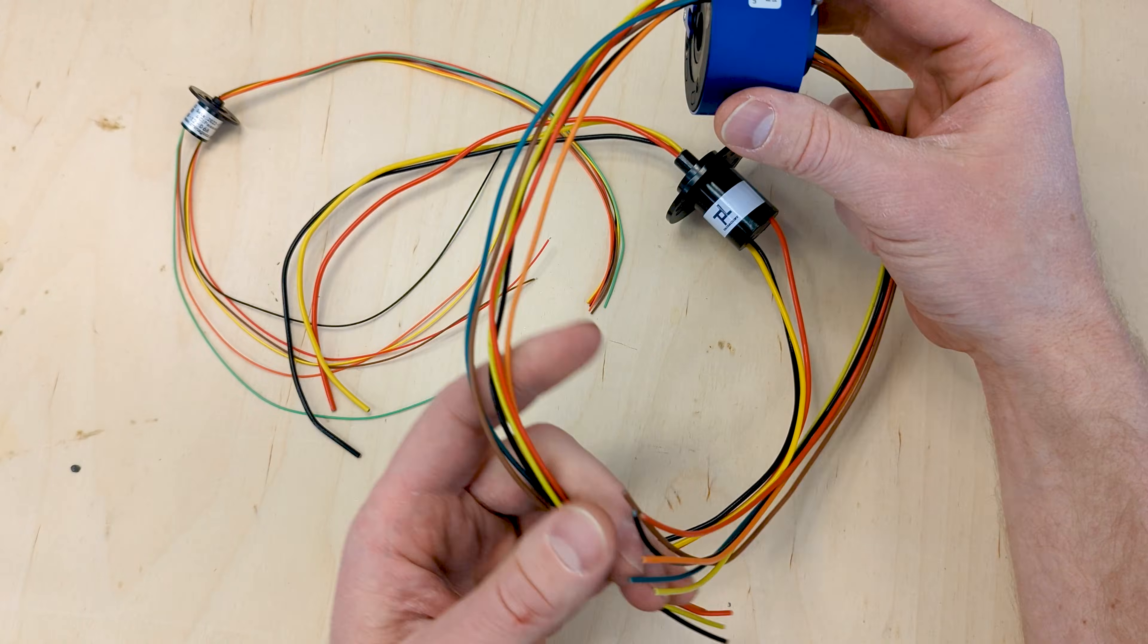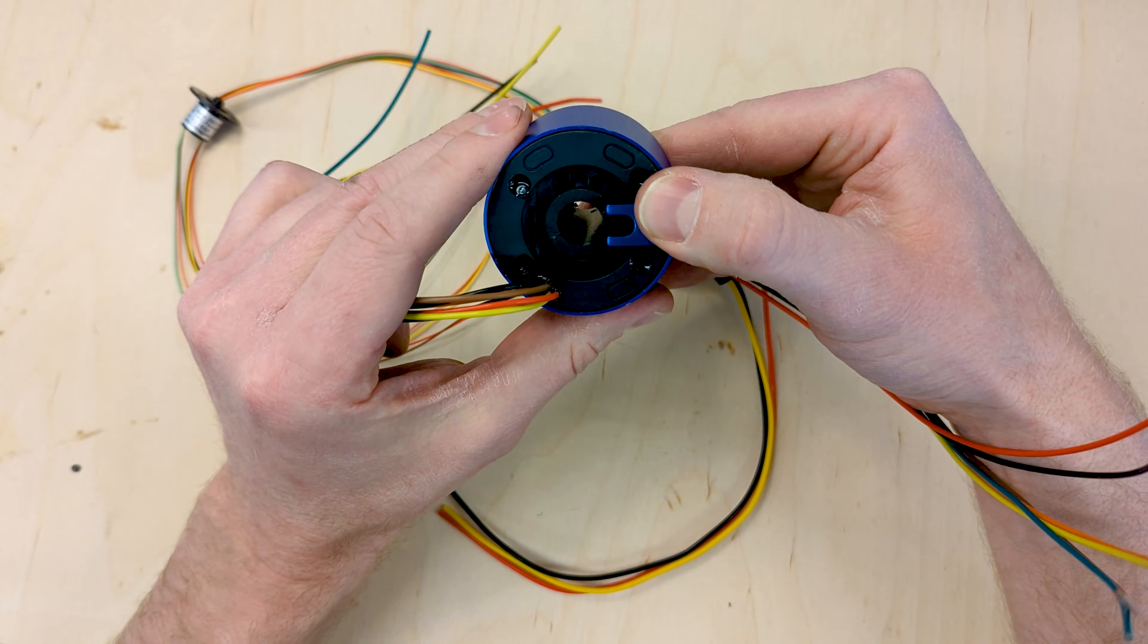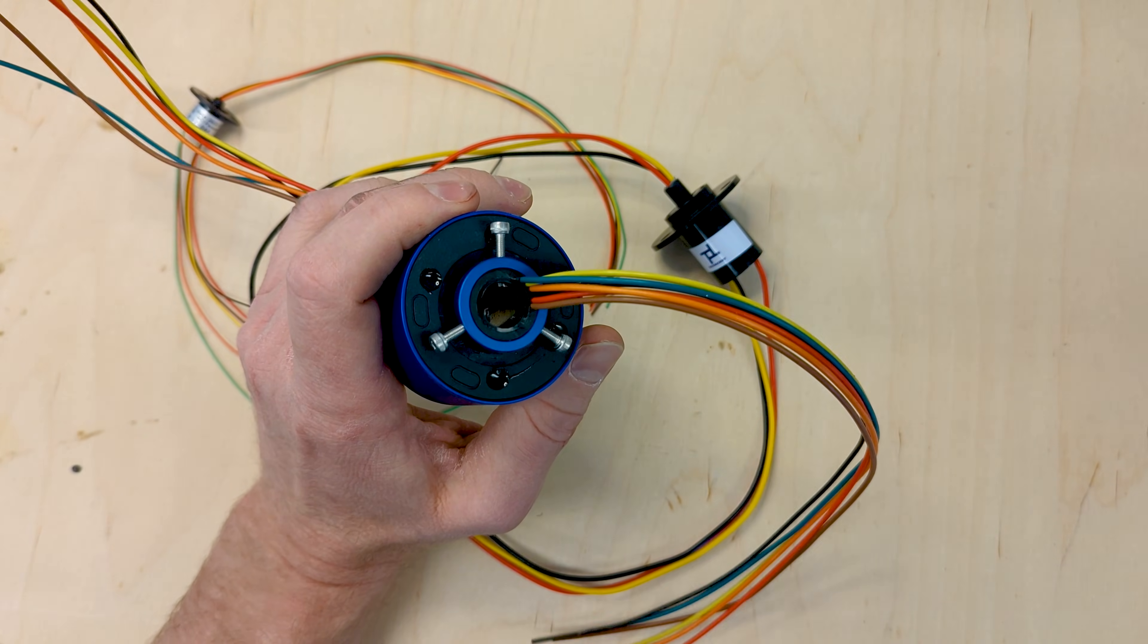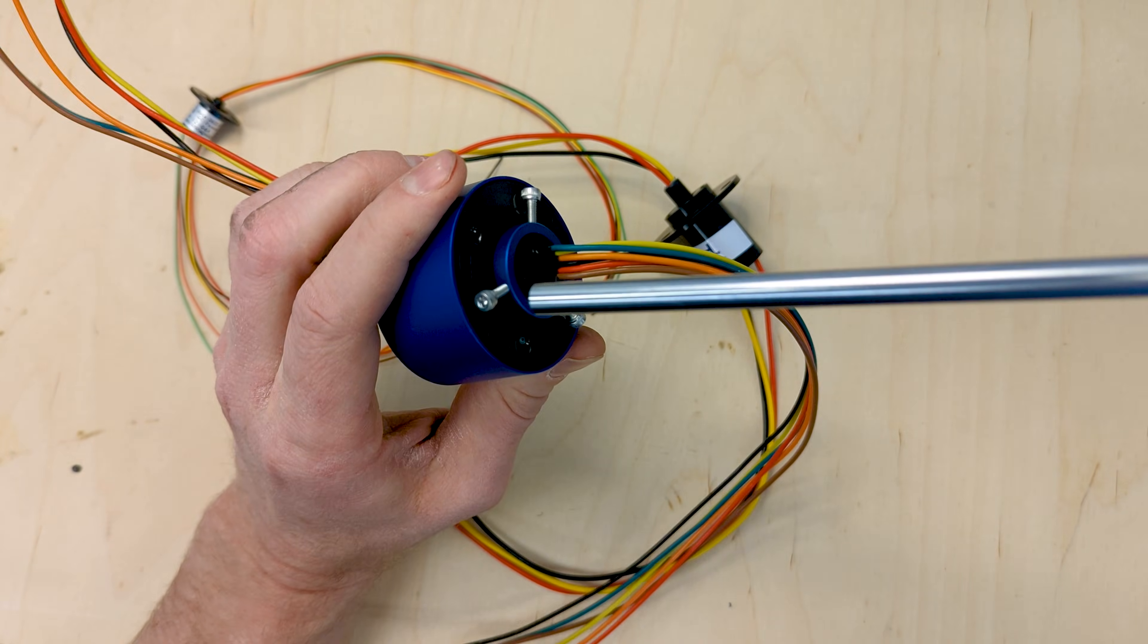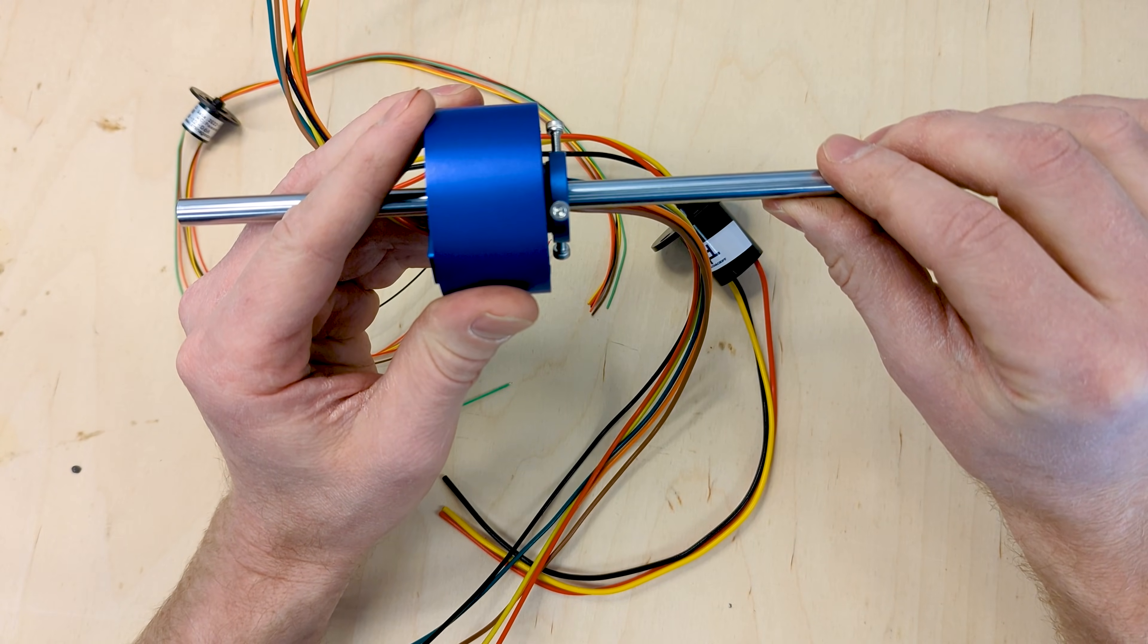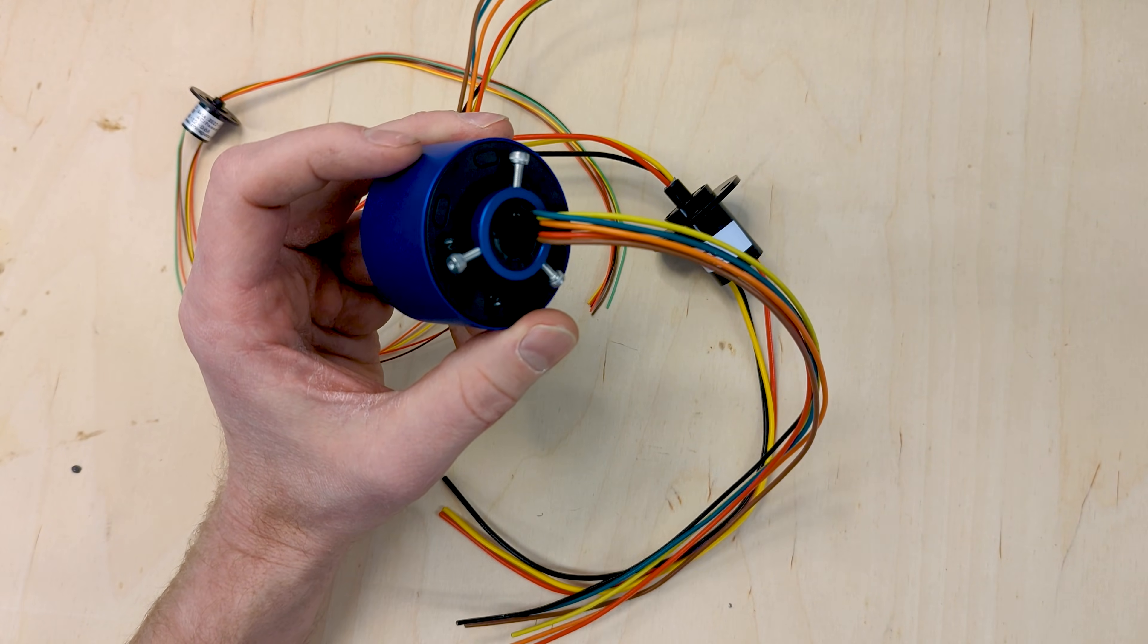Here I have a similar style slip ring, except the inside has a hollow bore. As you can see, it goes all the way through. This particular one accepts approximately an eight-millimeter shaft. I can put this in and then clamp onto that and make sure that everything spins along that shaft.